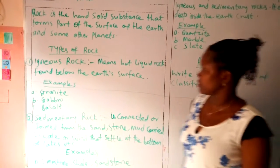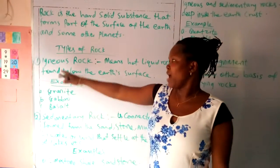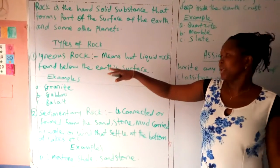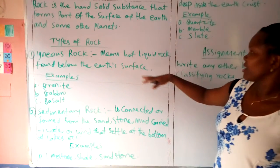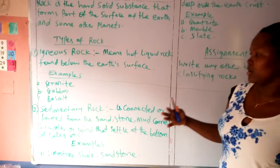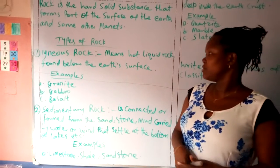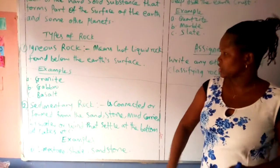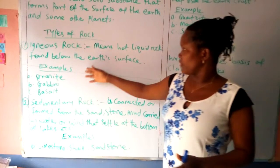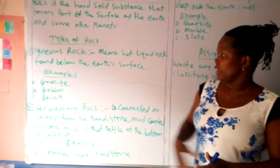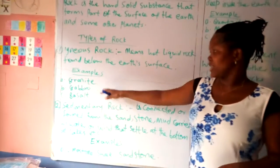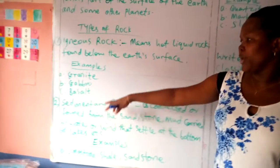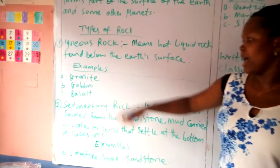Let's look at types of rock. We have igneous rock. Igneous rock means hot liquid rock found below the earth's surface. We have examples of igneous rock: we have granite rock, we have gabbro, we have basalt.